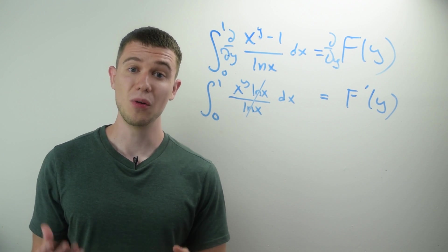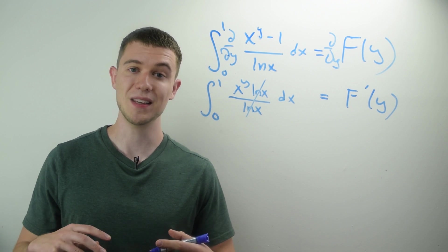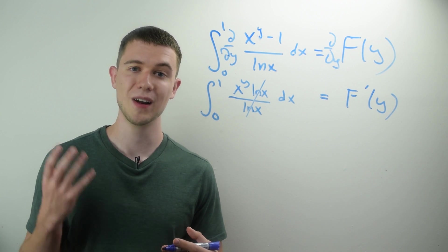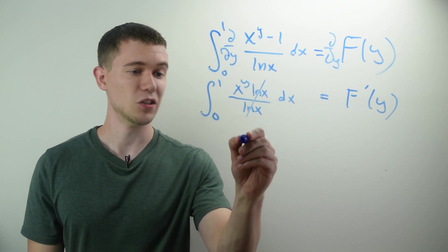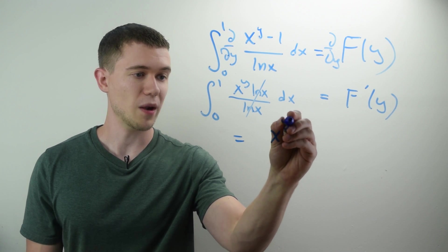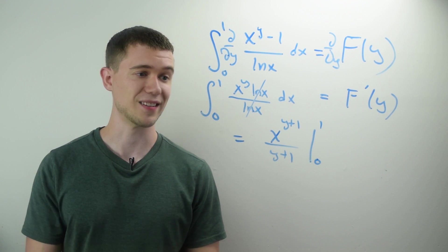Well now, now I'm integrating with respect to x, which means y is a constant. And I can just treat this like add 1 to the power divided by the new power, just like regular anti-differentiation. So all this is, this is just x to the y plus 1, divide by y plus 1, evaluate from 0 to 1 for x.